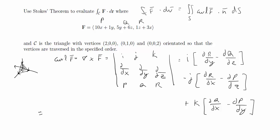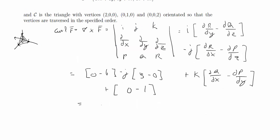Computing each component: ∂r/∂y is 0, minus ∂q/∂z which is 6, giving the i component. For the j component, ∂r/∂x is 3 minus 0. For the k component, ∂q/∂x is 0, and ∂p/∂y is 1. So the curl of the vector field is (−6, −3, −1).